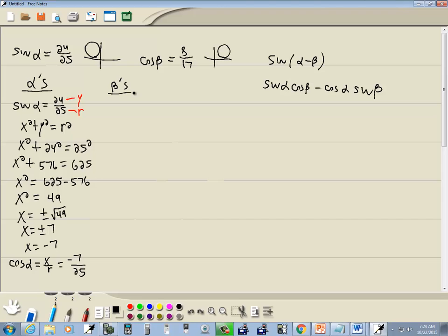Now let's look at the betas. They tell us that cosine beta is equal to 8 over 17. And cosine is equal to x over r. So that's x and this is r. So again, we're going to plug it into x squared plus y squared is equal to r squared. So we've got 8 squared plus y squared is equal to 17 squared.